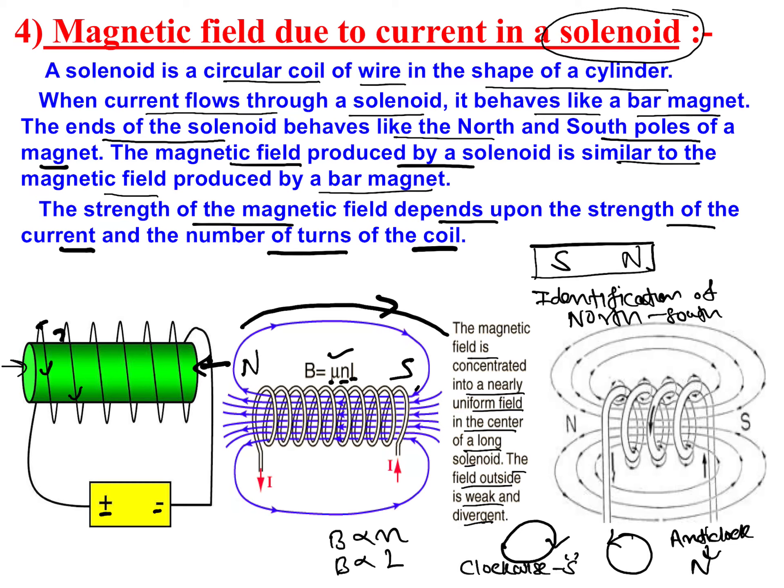In case the direction of current is anti-clockwise, then this is the north pole. And if this is clockwise, then this is the south pole.